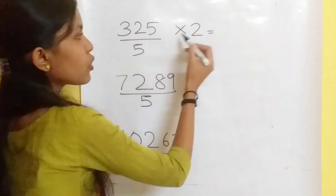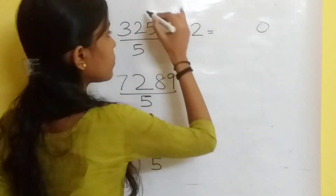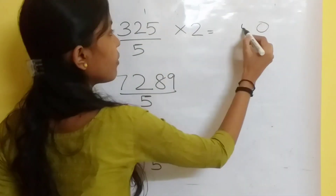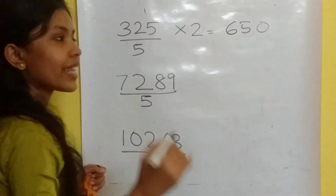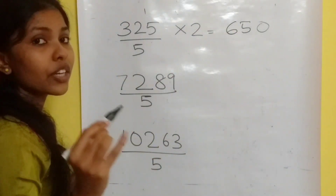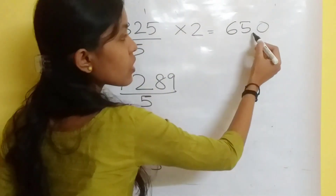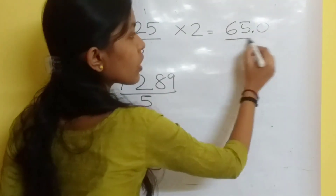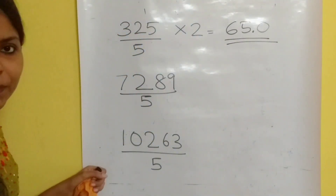Multiply by 2: 325 into 2 gives 650. The answer should contain only one digit after the decimal place, so 65.0 — the answer is 65.